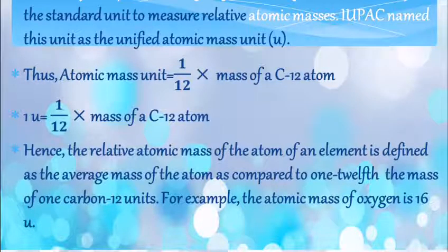For example, the atomic mass of oxygen is 16 u. So what was there? C-12 was considered as the standard element and other element masses were calculated by comparing the mass with this element, that is C-12.